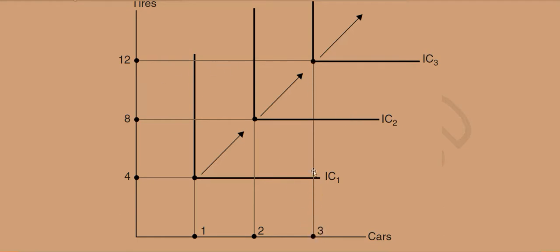They can work only with twelve tires. So they have to be here at this point, and for IC2 it should be this point, and for this it should be this point. In this way, there are three points only on these three indifference curves that are valid.